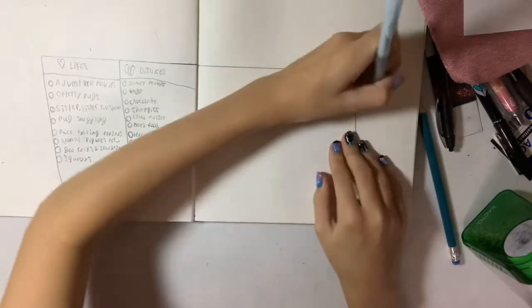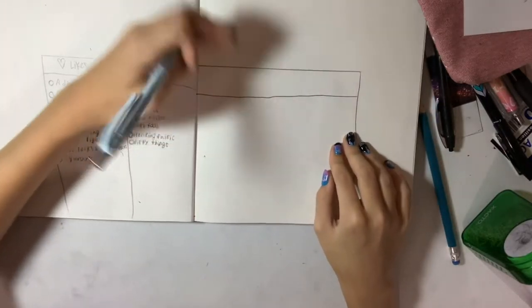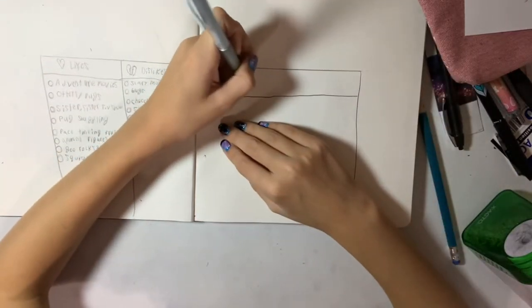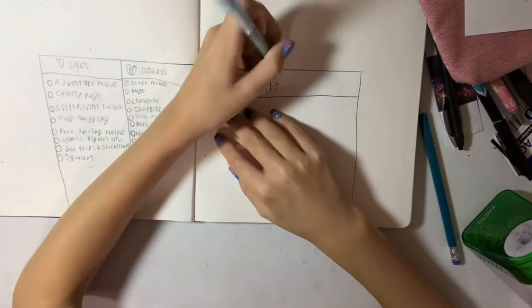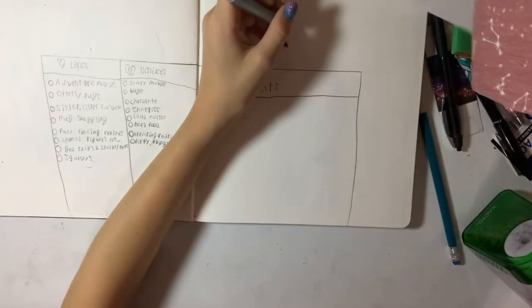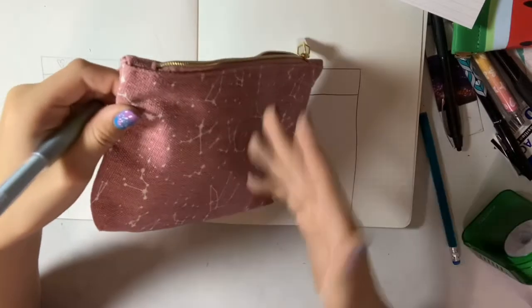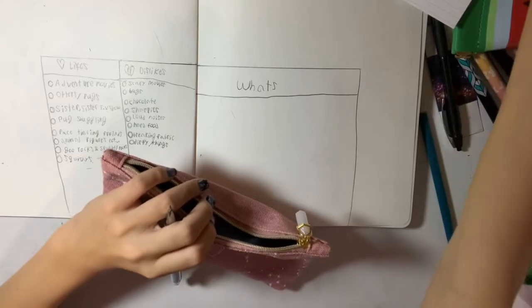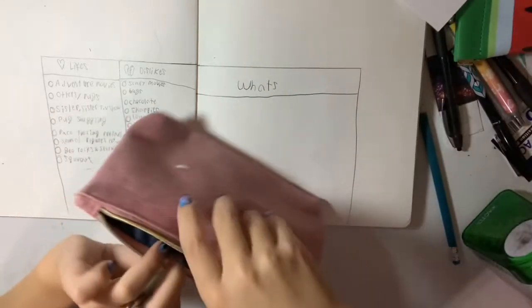So basically on this side, we're going to do like what's in my bag. If anyone knows like what that means, what's in my bag is kind of like what's in it. Well, say there's some markers in it or whatever is in this bag. Like I have like pens in my bag.